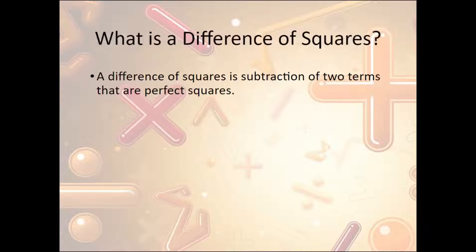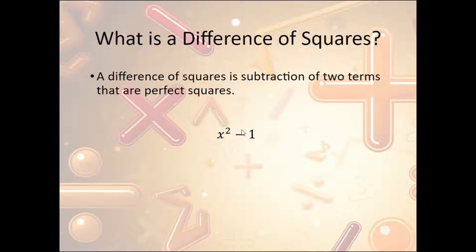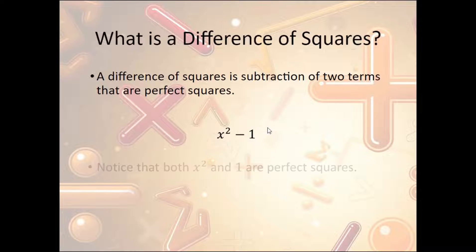What is a difference of squares? A difference of squares is the subtraction of two terms that are perfect squares. For instance, x squared minus 1. Remember, difference means subtraction, so it's got to be subtraction. And each of these numbers needs to be a perfect square. x squared is x to the second power, and 1 is just 1 squared. So this is a difference of squares.